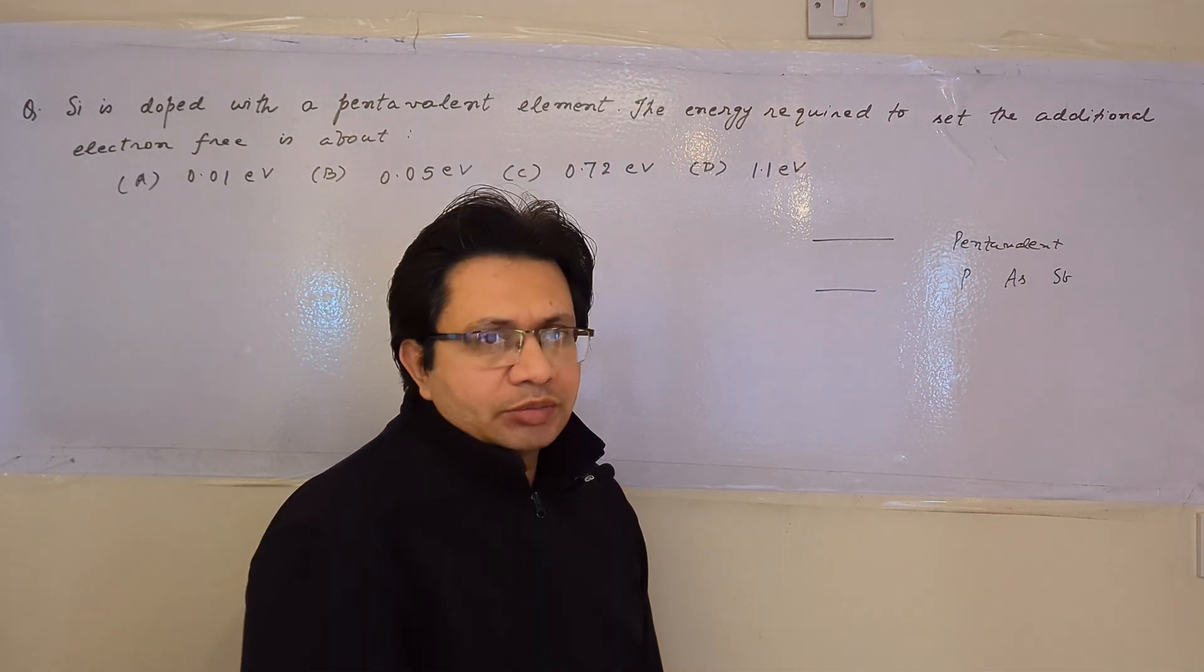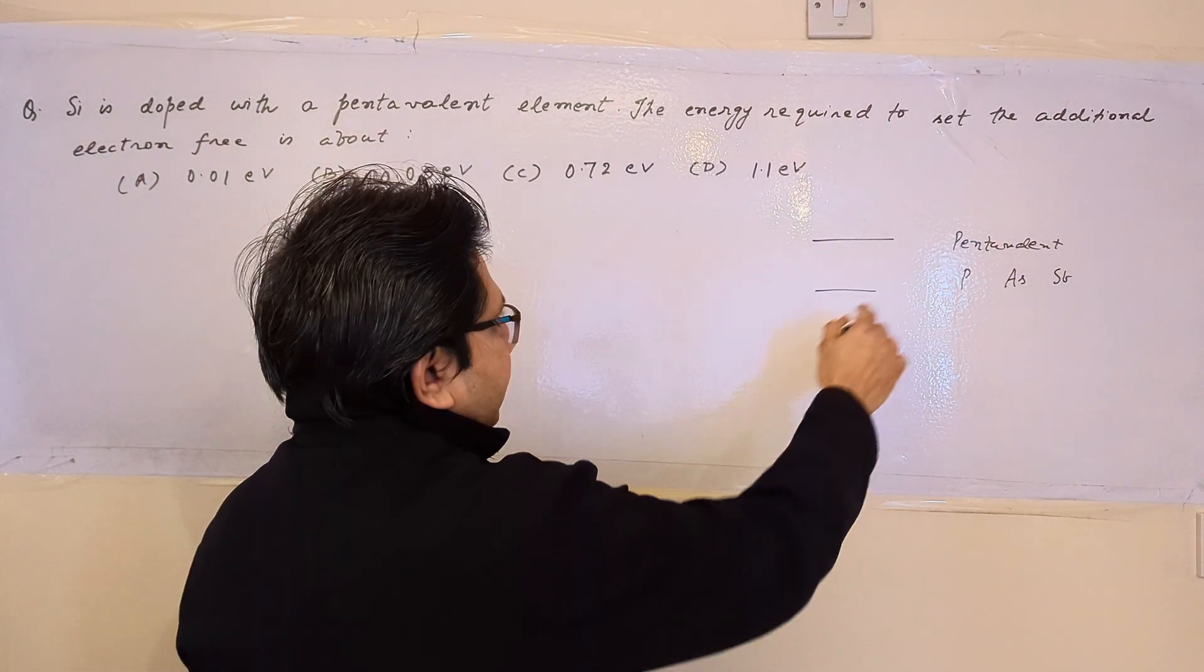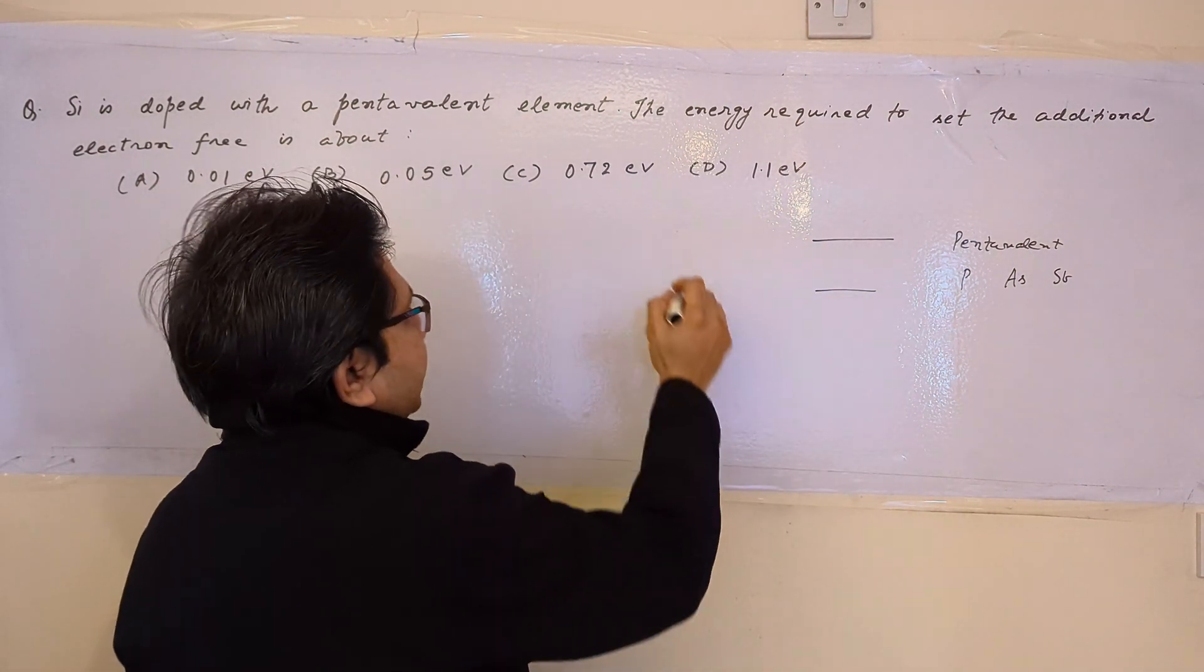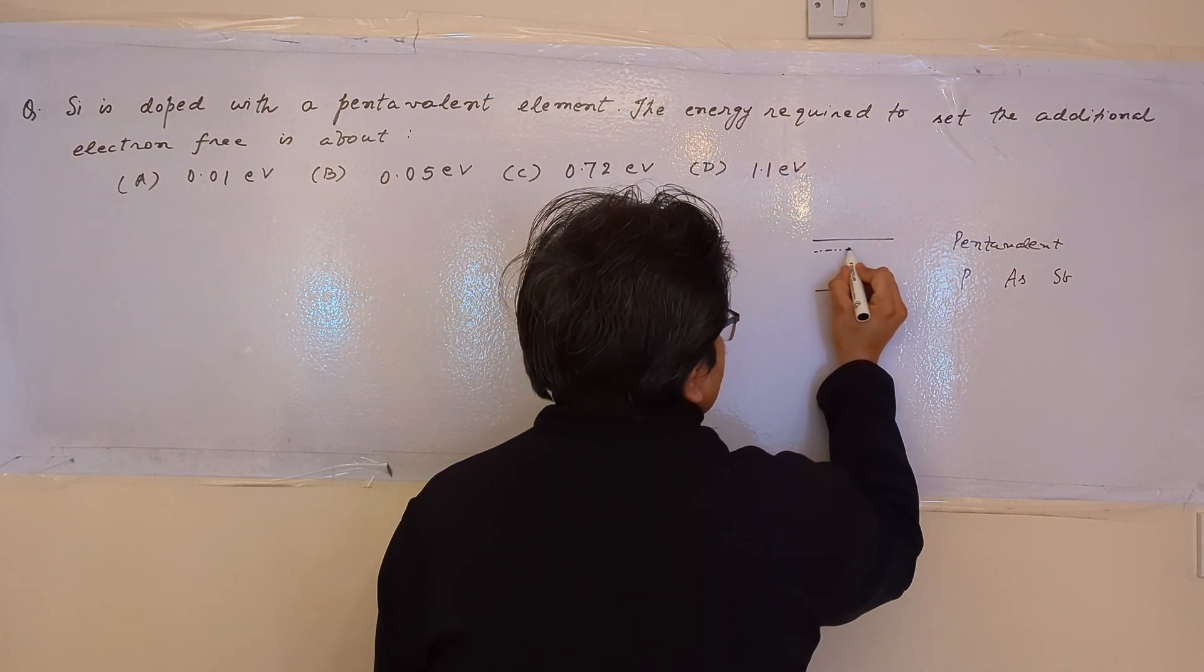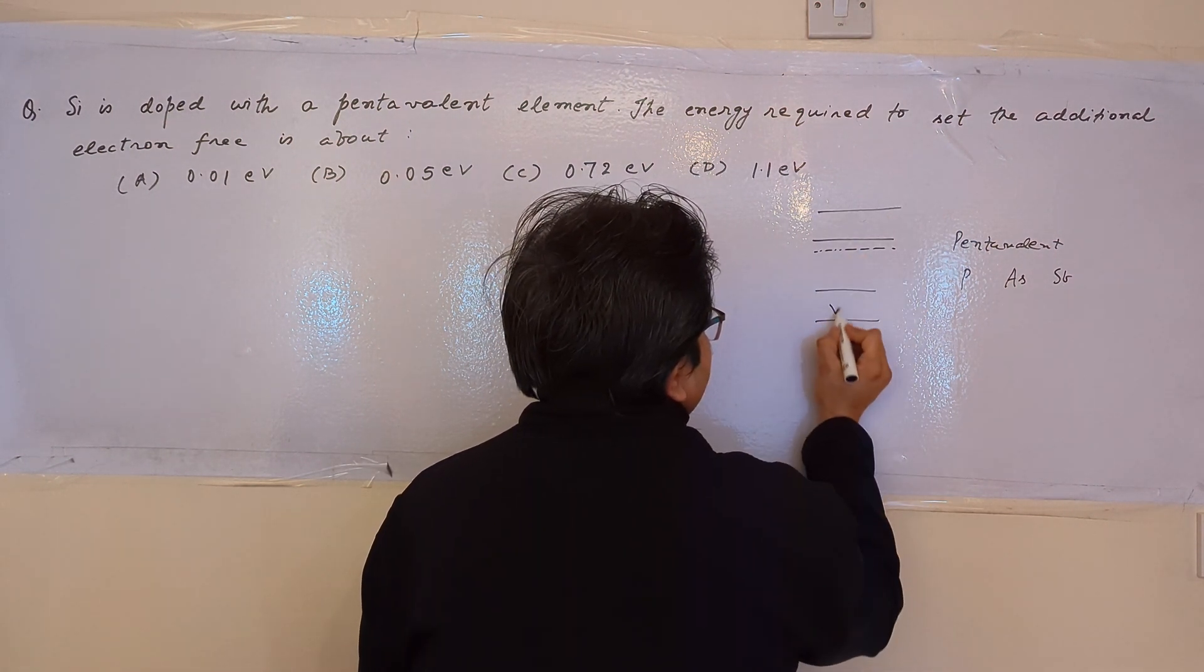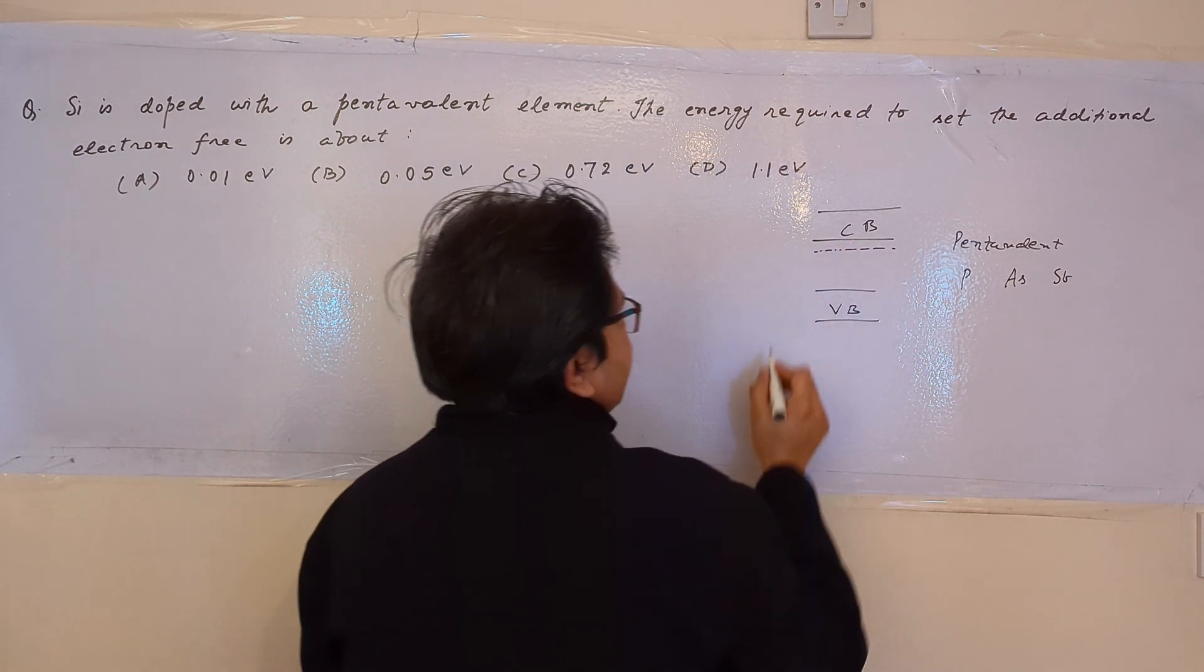Now, 4 electrons are used to form the covalent bond with the silicon atom. The one electron which is the extra electron, if you want to free it, means that we have to make it jump to the conduction band. There is a valence band and a conduction band.